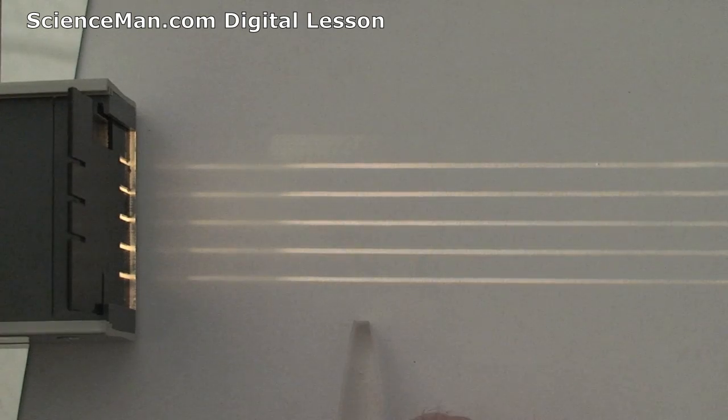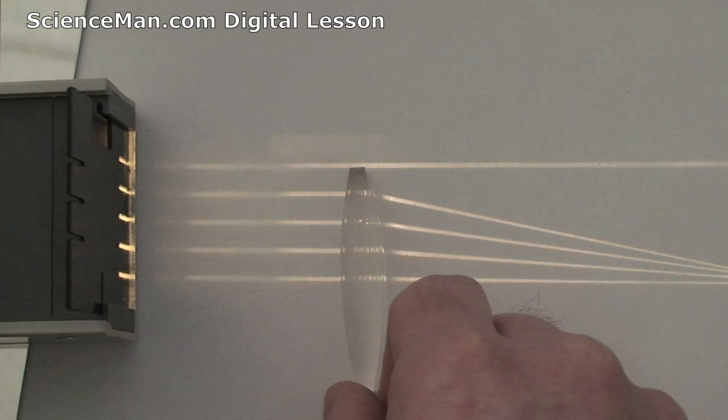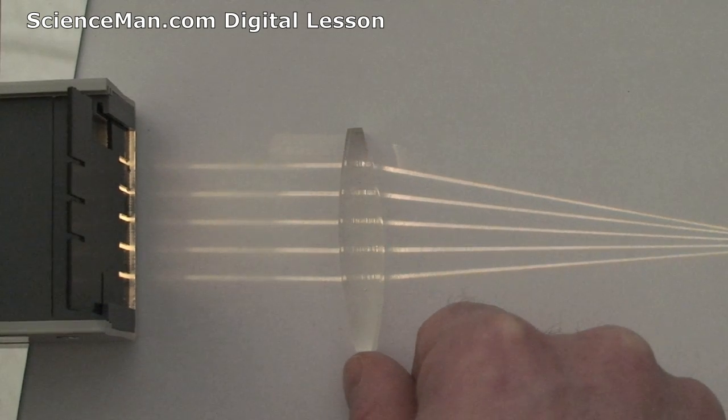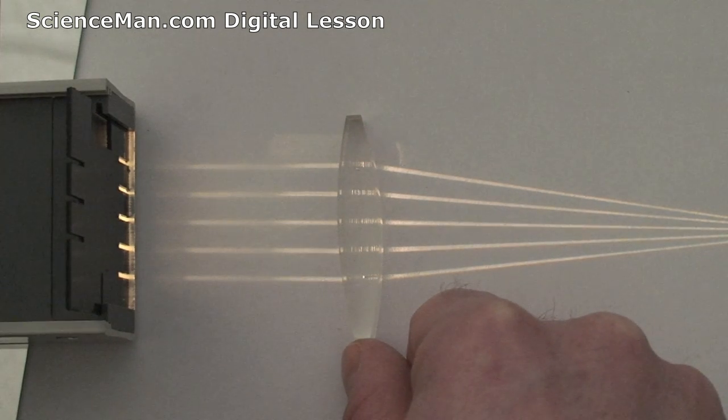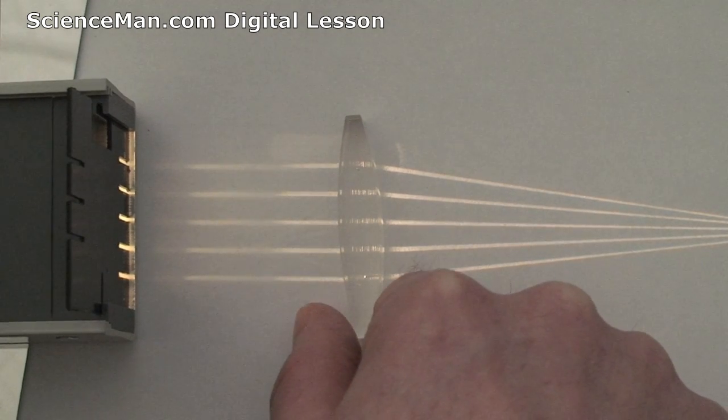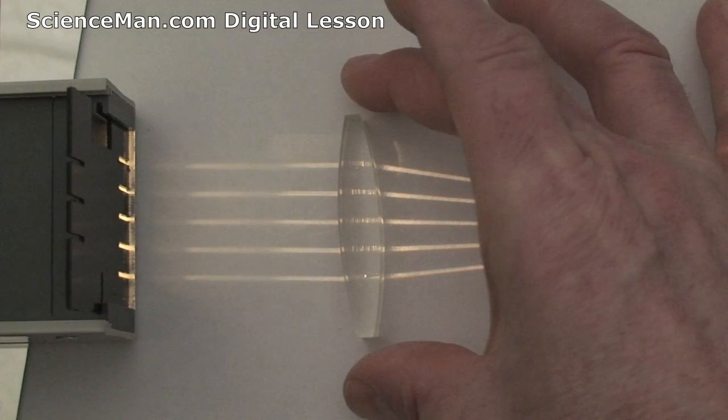Now what's really cool is we can apply the concept of refraction to a series of parallel light beams. Now if we take a convex lens which is curved, notice that as we place it in the path of the light beams, each of the light beams bends different amounts depending on the curvature of the lens where the light beam strikes.